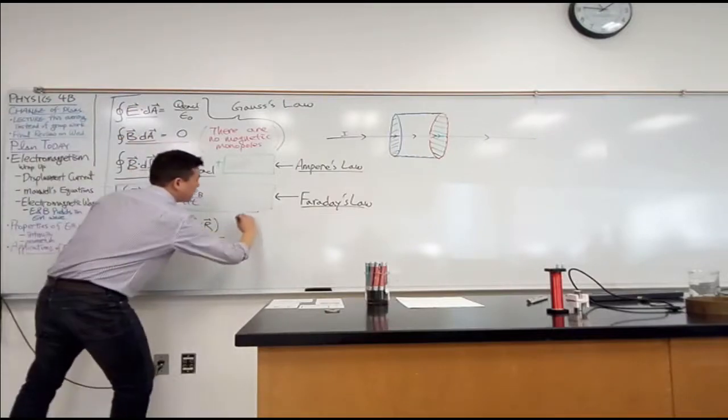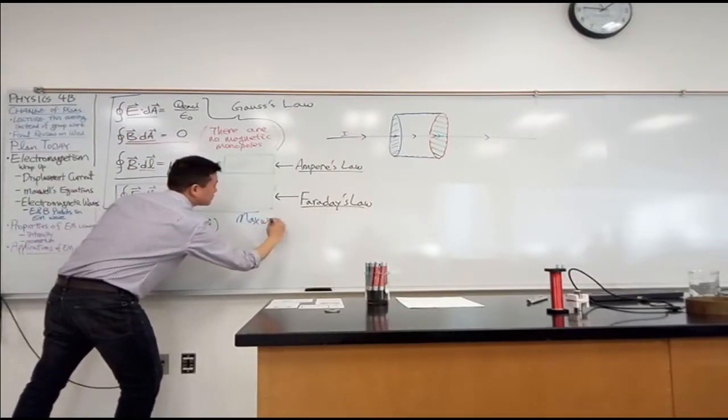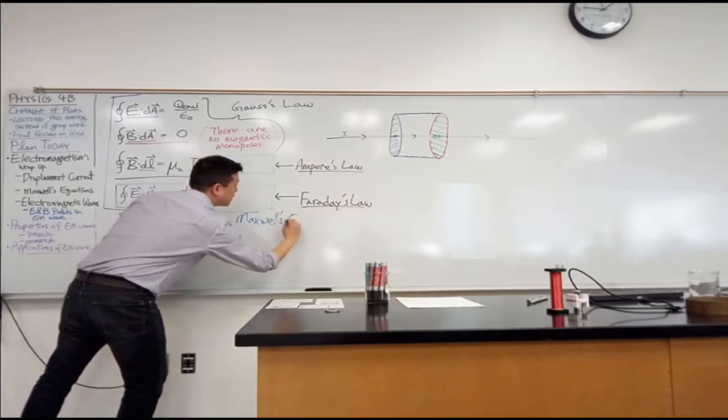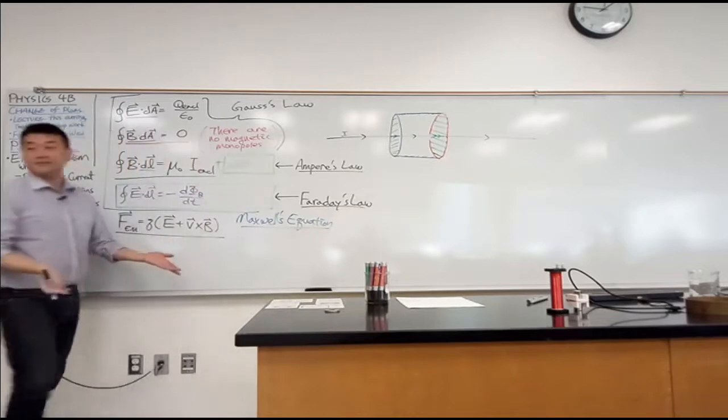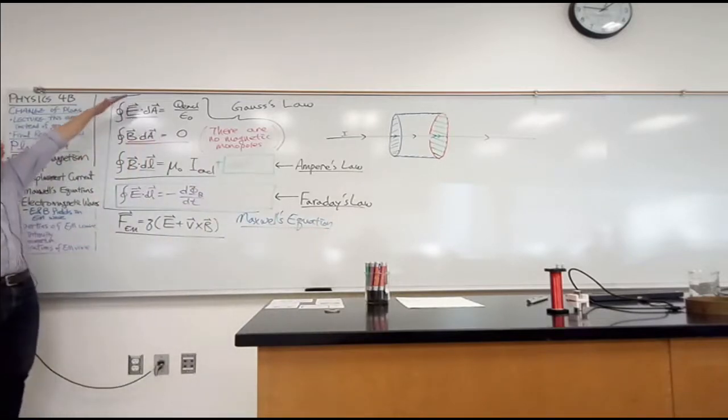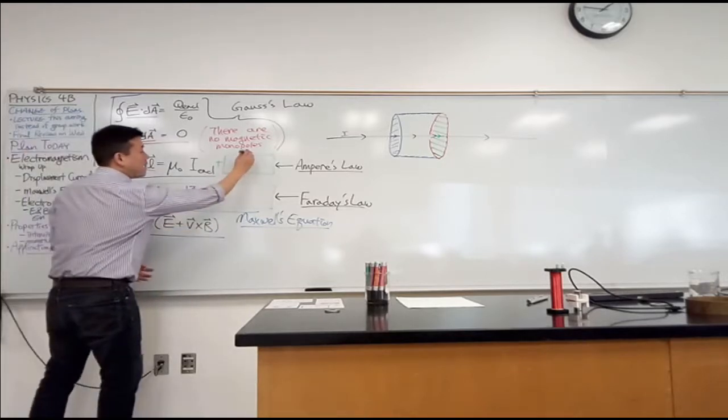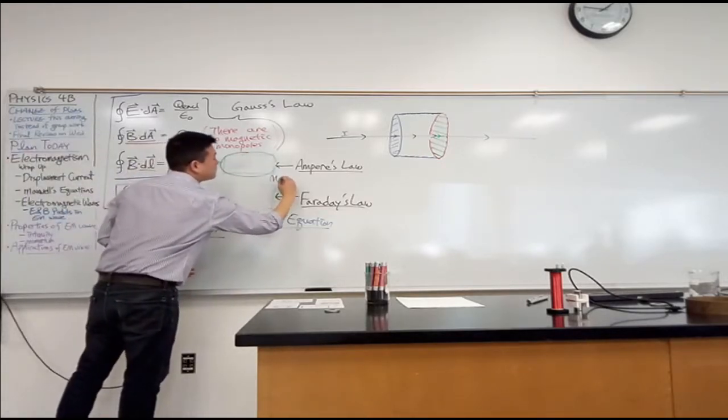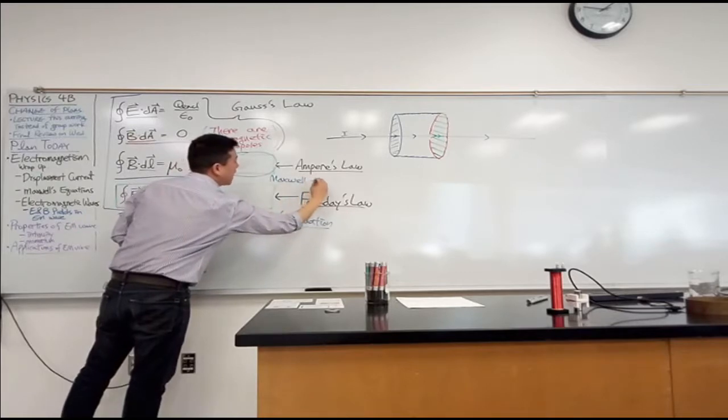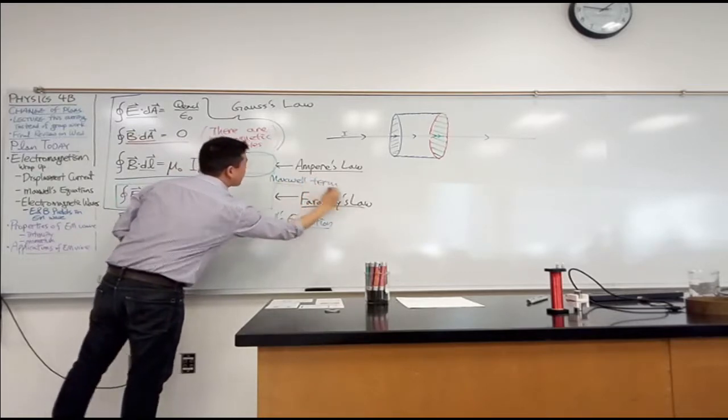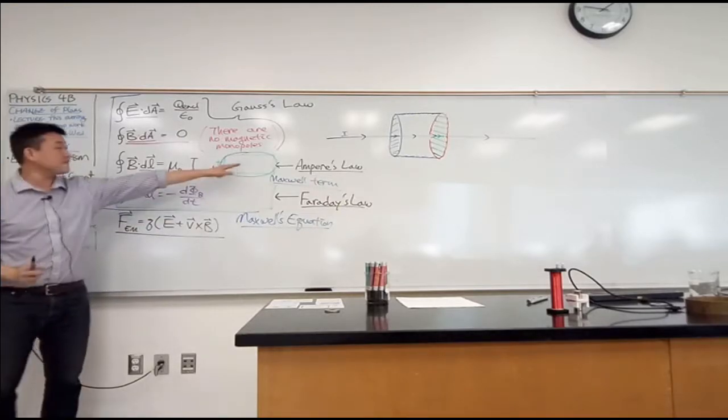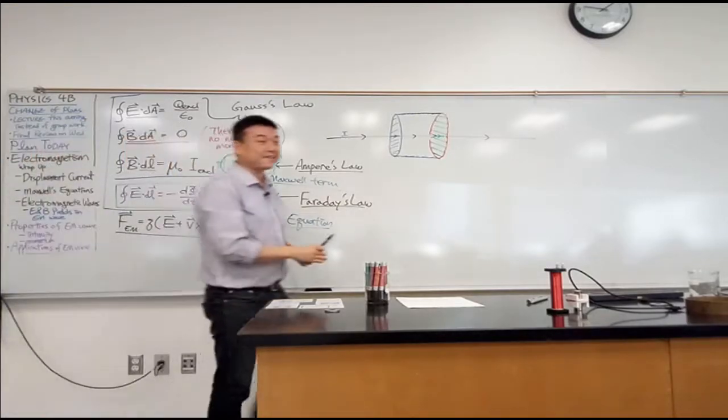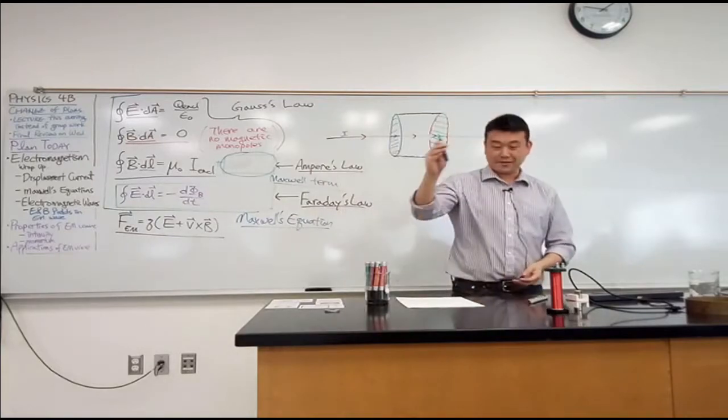We call this Maxwell's equations. It's not because Maxwell came up with all of them - he didn't. He didn't come up with any single one of these equations. But he was the guy who came up with what's called the Maxwell term. It's the very last term to be discovered, to be reasoned through in electricity and magnetism. And since this is the piece that completes electricity and magnetism, he gets to put his stamp on it.